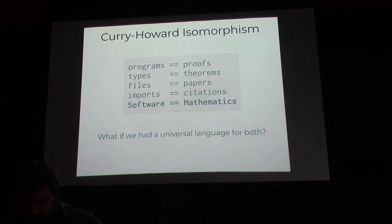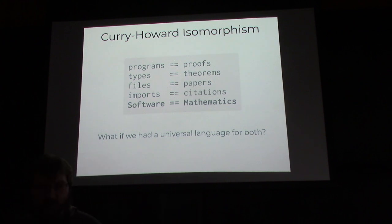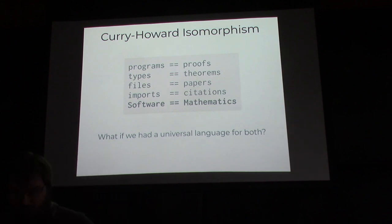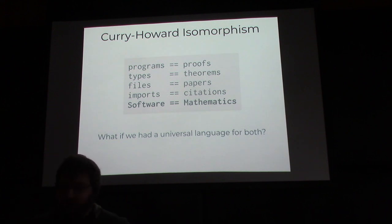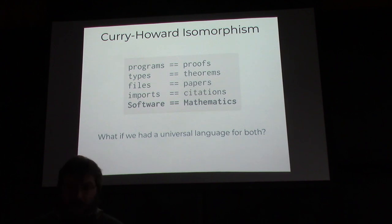Dependent types are really useful because of the Curry-Howard isomorphism, which essentially says there's a structural correspondence between programs in a typed language and theorems. Imports are kind of like citations and files are kind of like papers. This is used a lot in dependently typed languages like Agda, Coq, and Idris.